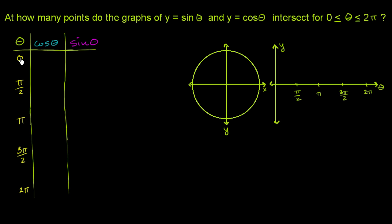When theta is equal to 0, we're at this point on the unit circle, which has coordinate (1, 0). So cosine of theta is 1, and sine of theta is 0. Cosine gives the x-coordinate at the point of intersection with the unit circle, and sine gives the y-coordinate.